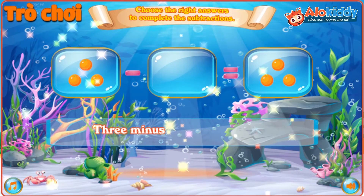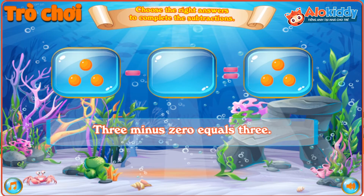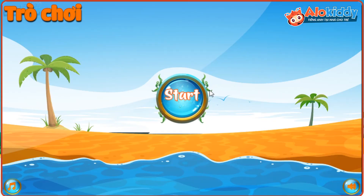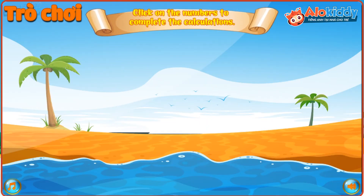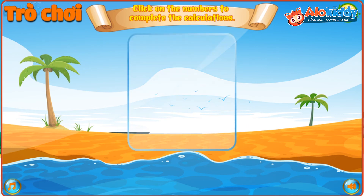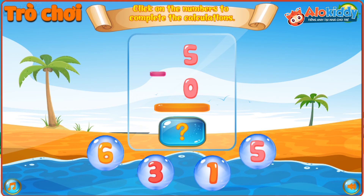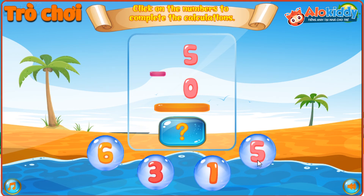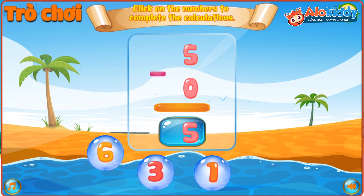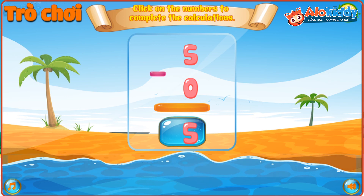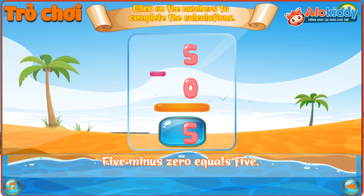Three minus zero equals three. Now choose the correct picture to complete the equation below. Excellent! Five minus zero equals five.